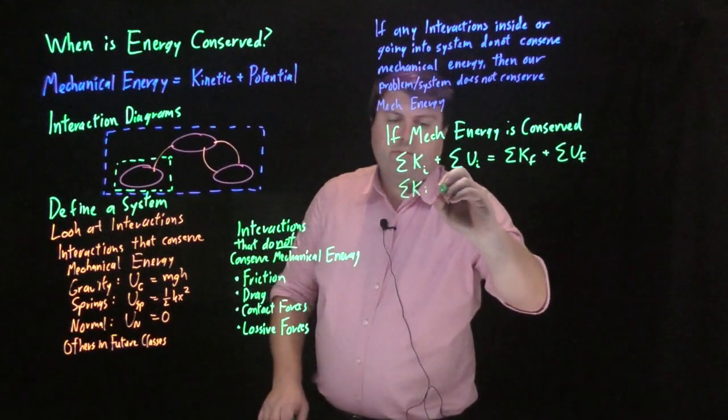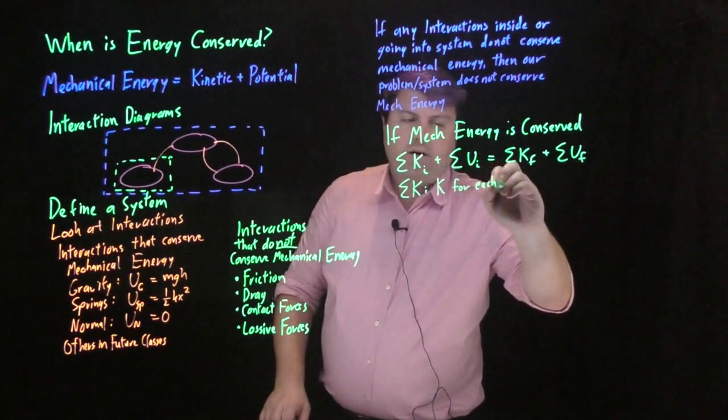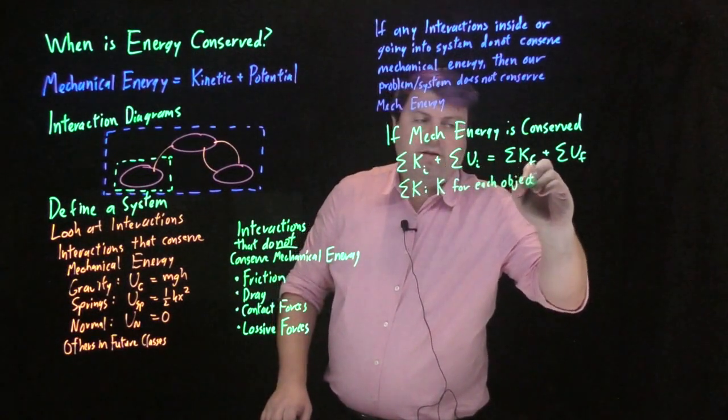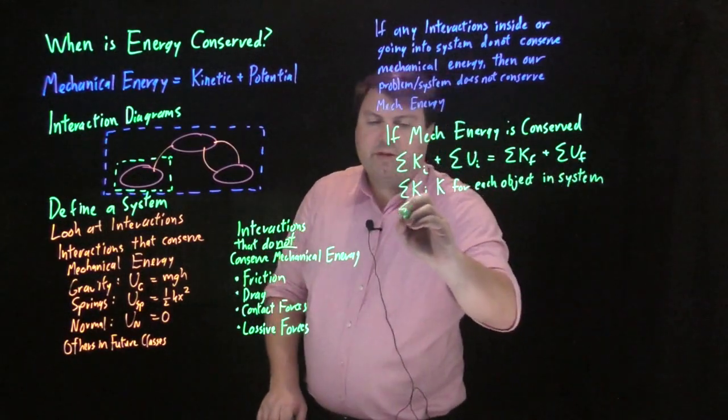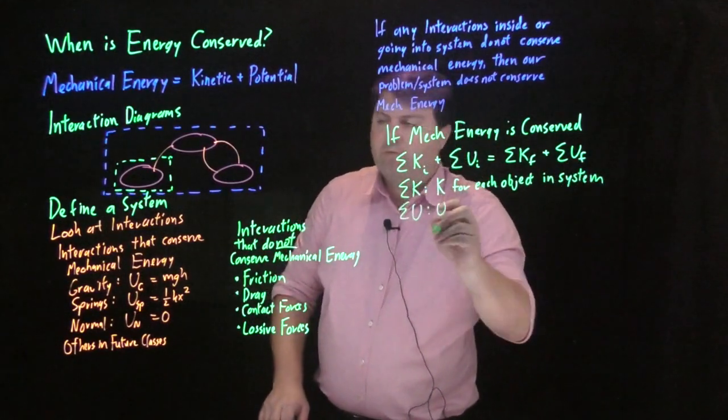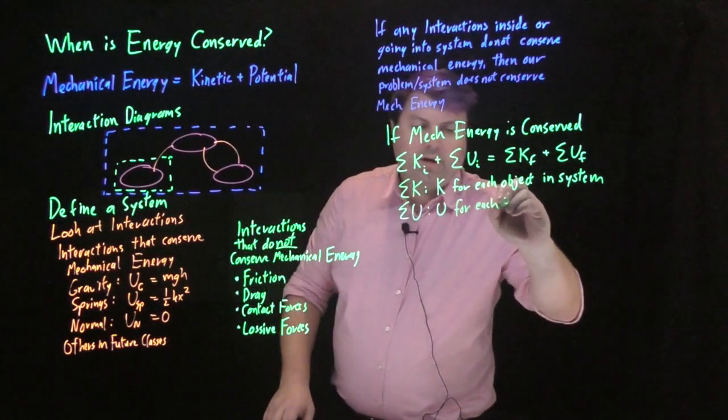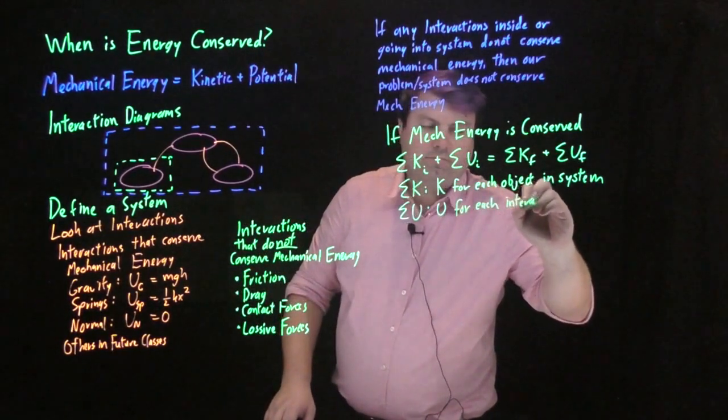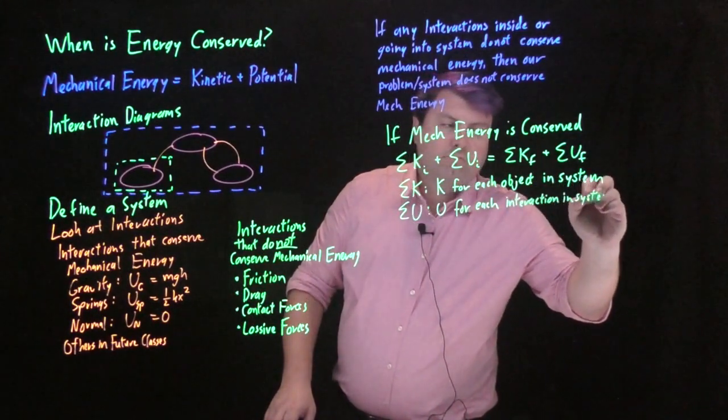When we say sum of the K's, we mean a K for each object in the system. And when we say sum of the U's, we mean the U, which is potential energy, for each interaction in the system.